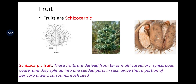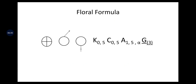Fruit is schizocarpic — derived from a bi- or multicarpillary syncarpous ovary and splits up into one-seeded parts in such a way that a portion of pericarp always surrounds each seed. Floral formula: hermaphrodite flowers as well as unisexual flowers. Calyx 0–5, corolla 0–5, androecium 1–5 to infinity, gynoecium superior with 3 carpels.